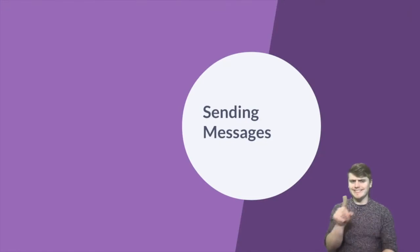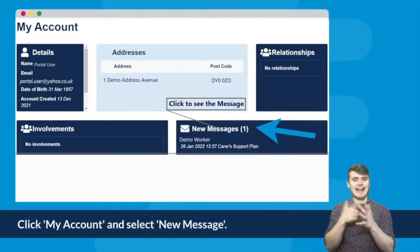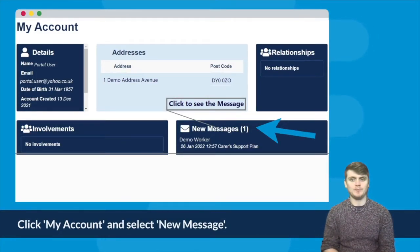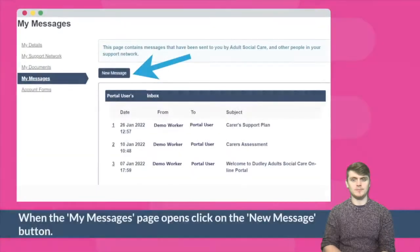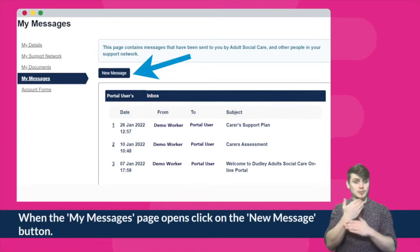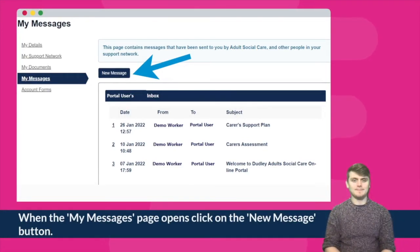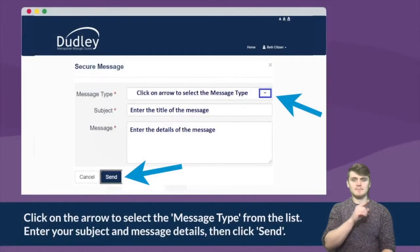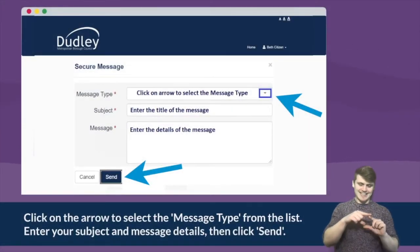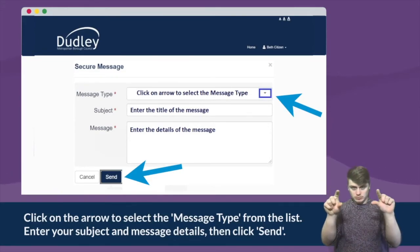Sending messages. Click My Account and select New Message. When the My Messages page opens, click on the New Message button. Click on the arrow to select the message type from the list, enter your subject and message details, then click Send.